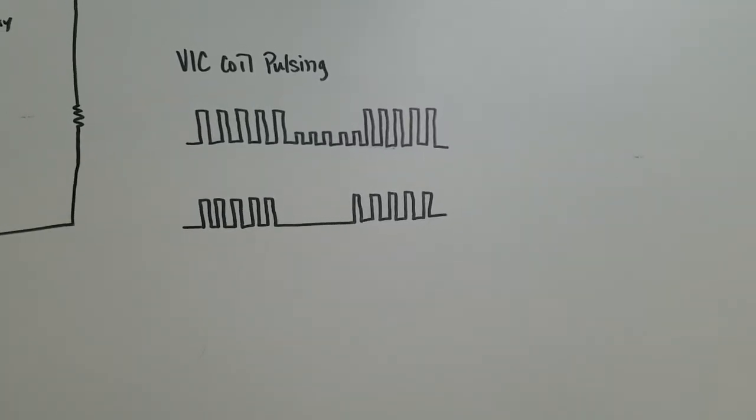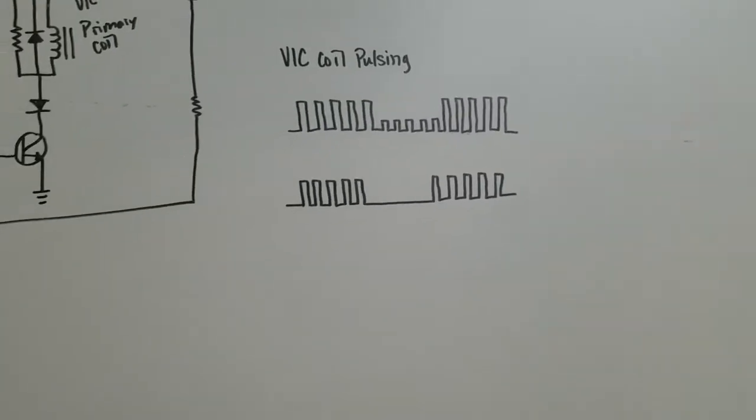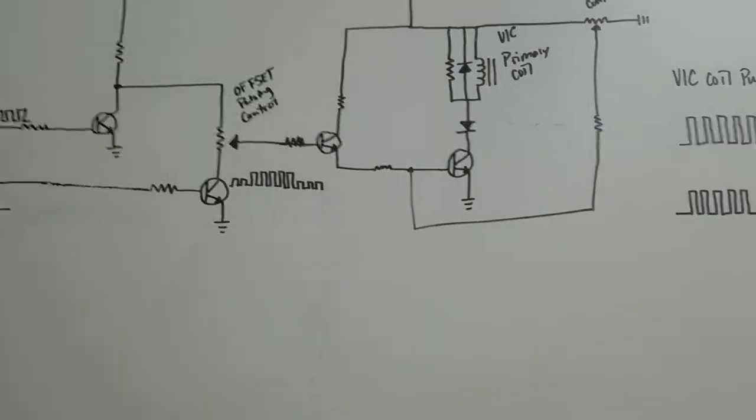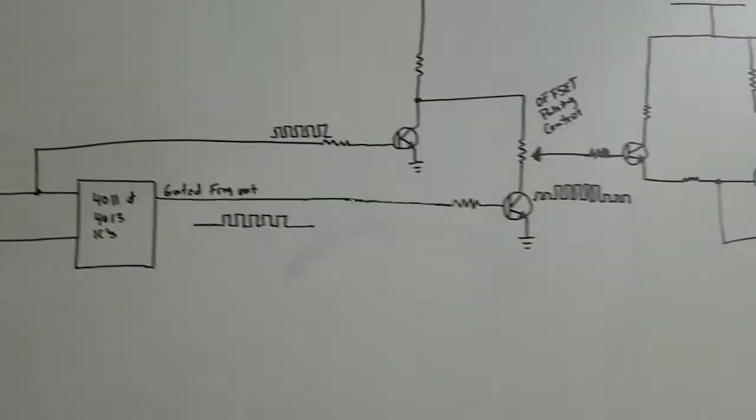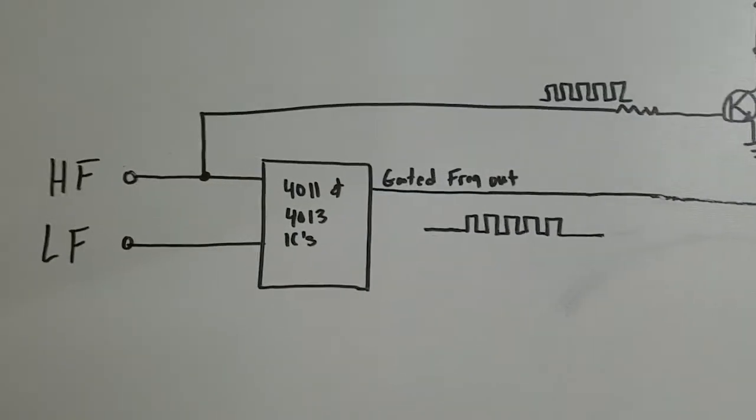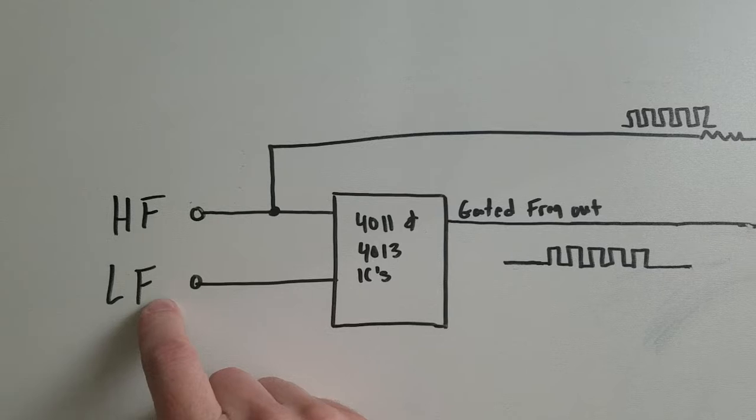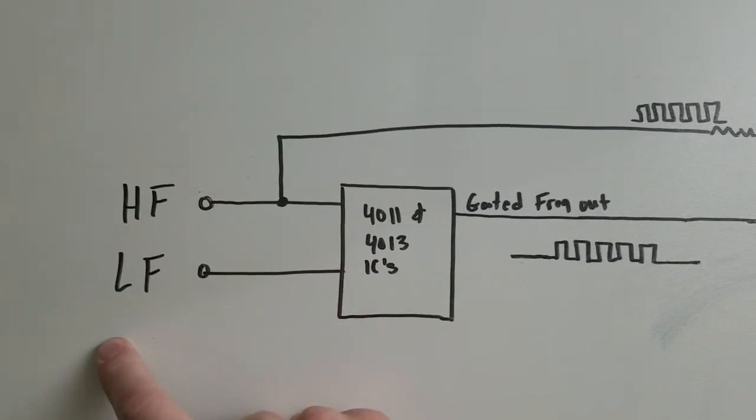But since I've had so many people ask about it I'll show you basically what I did to merge the signals and then get that variable pulsing during the gate time. So I had my high frequency, low frequency, both unipolar square waves.